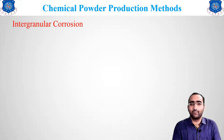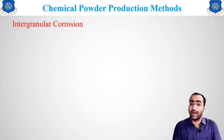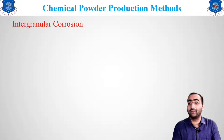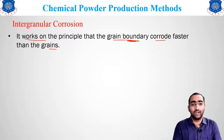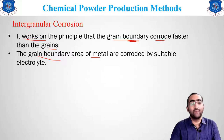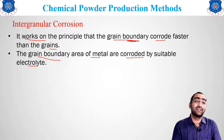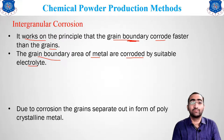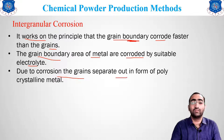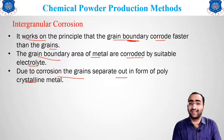The second chemical method is intergranular corrosion. Here, we intentionally induce corrosion between the intergranular grains. The method works on the principle that grain boundaries corrode faster than the grains themselves. A suitable electrolyte is used to corrode the grain boundary area of the metal. Due to this corrosion, the grains separate out in the form of polycrystal, and gaps appear between grains.